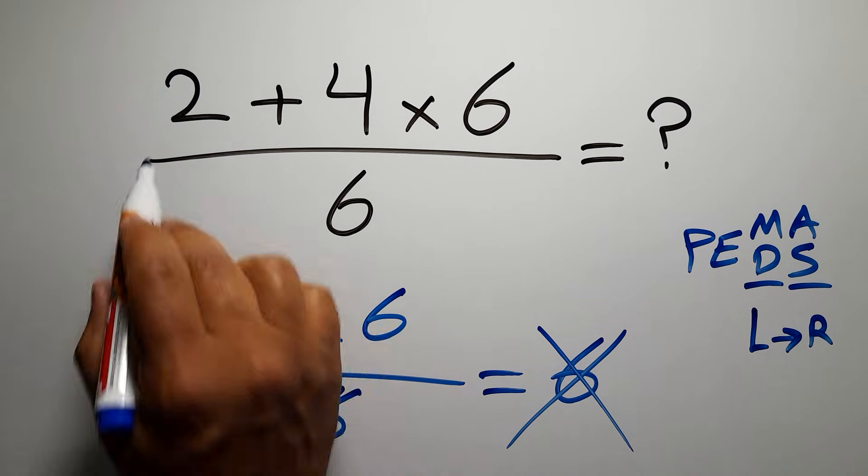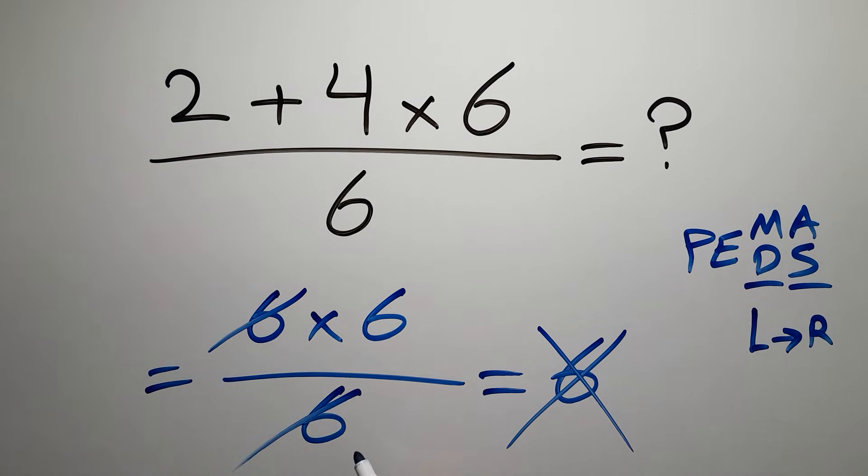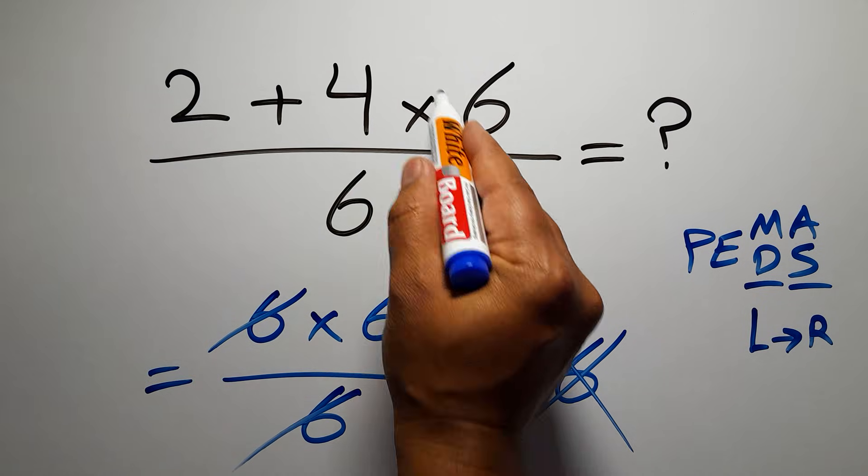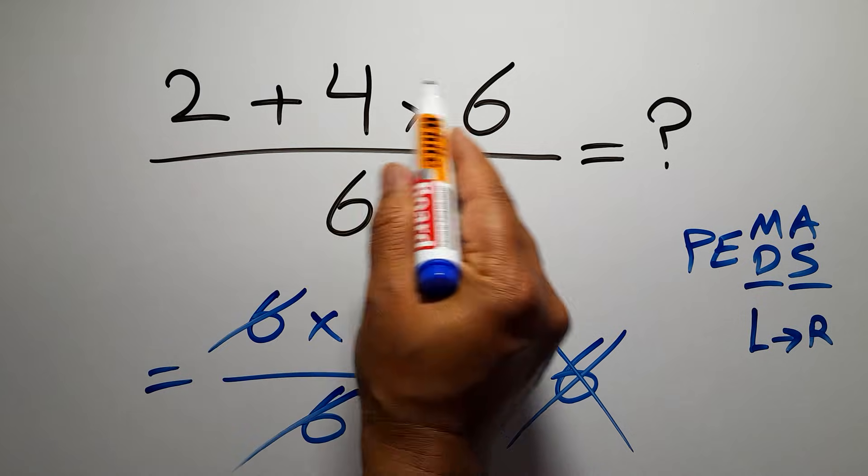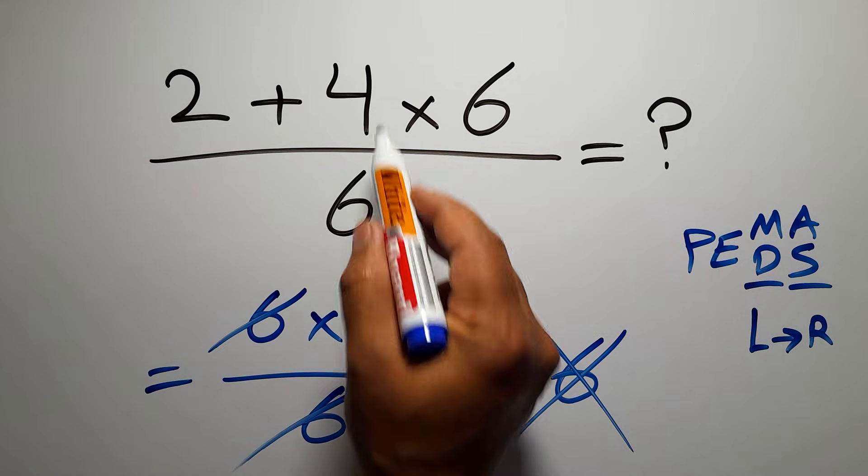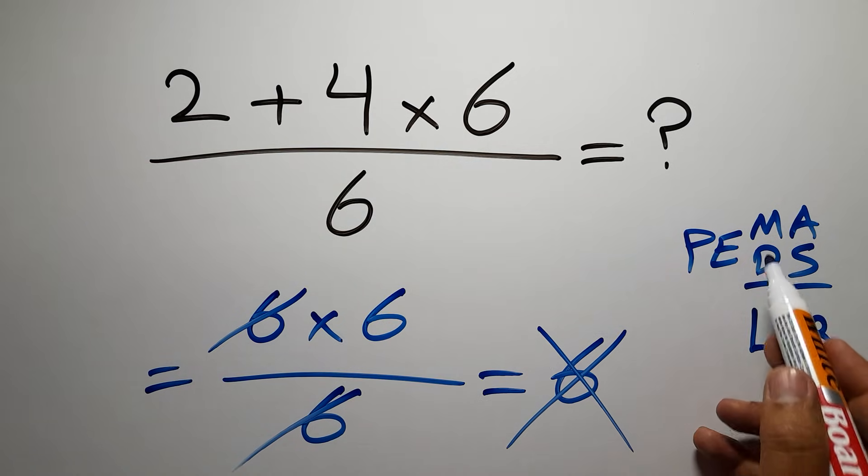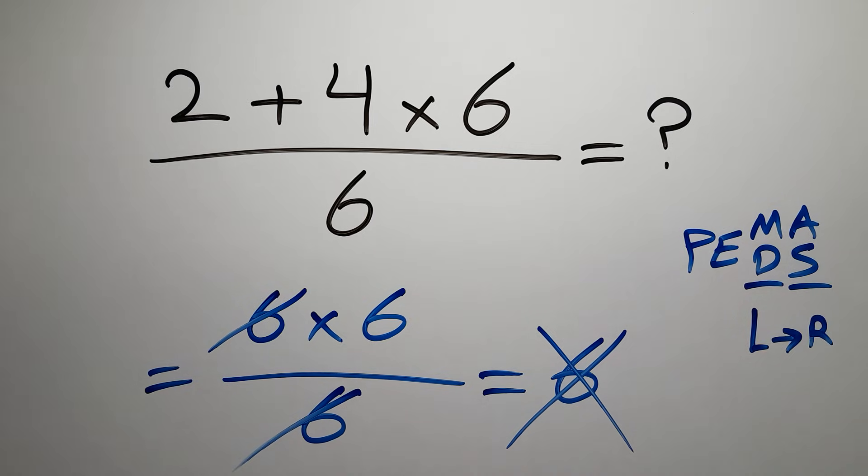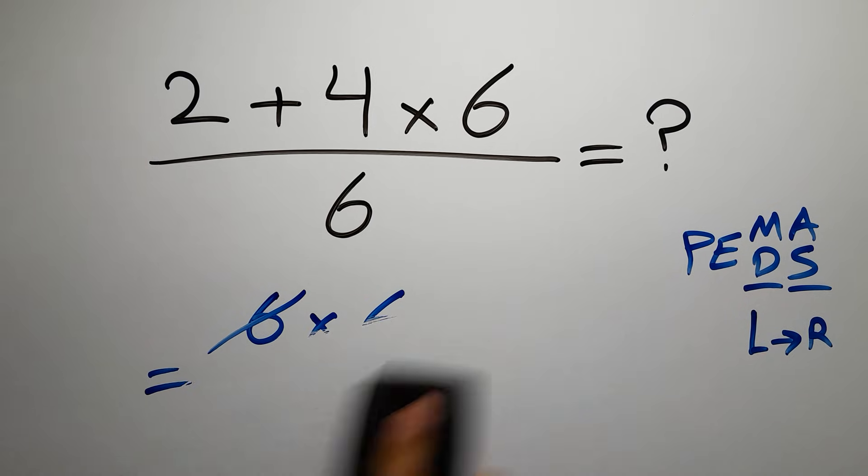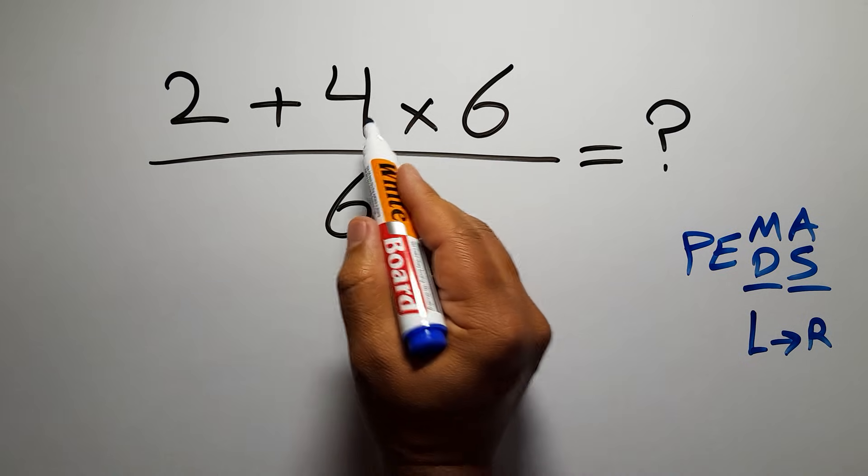In this numerator, first we have to do this multiplication, not this addition. If you do this addition before this multiplication it is wrong because in PEMDAS multiplication comes before addition. Okay, so first we have to do this multiplication.